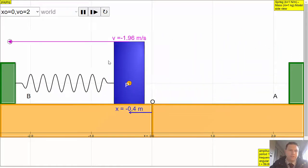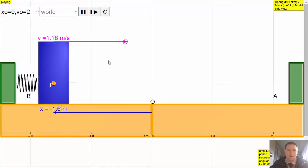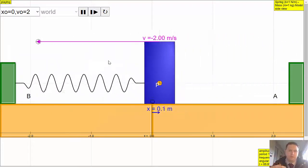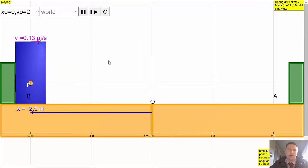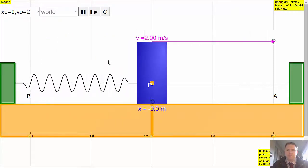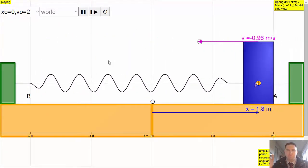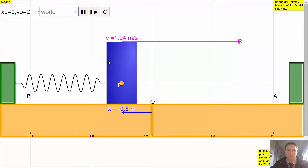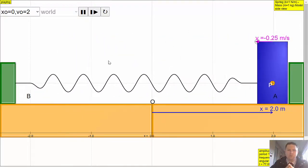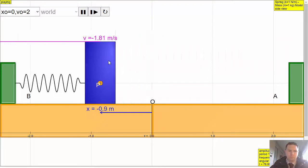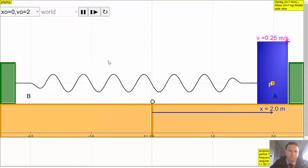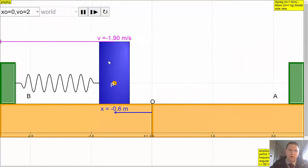So we have the largest accelerations at both ends when we have the largest change in velocity, because the velocity is going from positive to negative. The velocity is actually zero at each end and the velocity is maximum in the center. We're seeing acceleration is maximum at both ends and zero in the center. Is that what you would have expected?